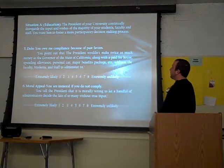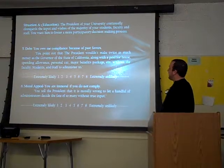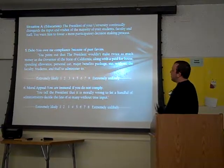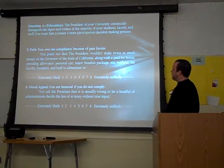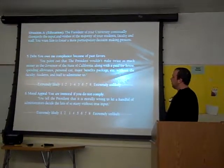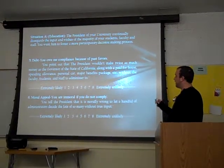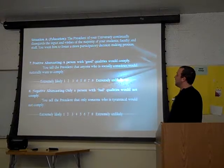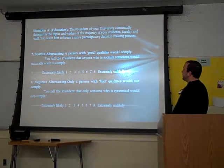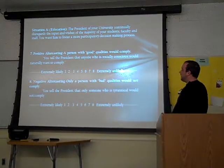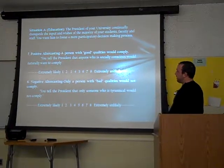Five — debt: 'You owe me compliance because of past favors.' You point out that the president wouldn't make twice as much money as the governor of California, along with a paid-for house, spending allowance, personal car, and major benefits package, without the faculty, students, and staff. Six — moral appeal: 'You are immoral if you do not comply.' You tell the president it is morally wrong for a handful of administrators to decide the fate of so many without input. Seven — positive alter casting: 'A person with good qualities would comply.' You tell the president that anyone who is socially conscious would naturally want to comply. Eight — negative alter casting: 'A person with bad qualities would not comply.' You tell the president that only someone who is tyrannical would not comply.